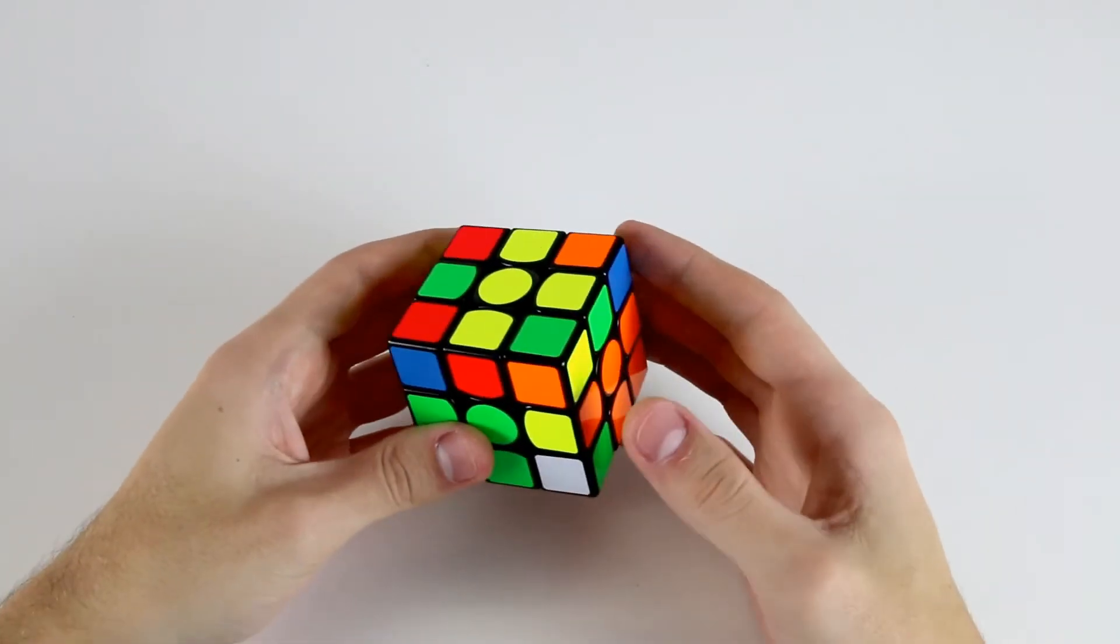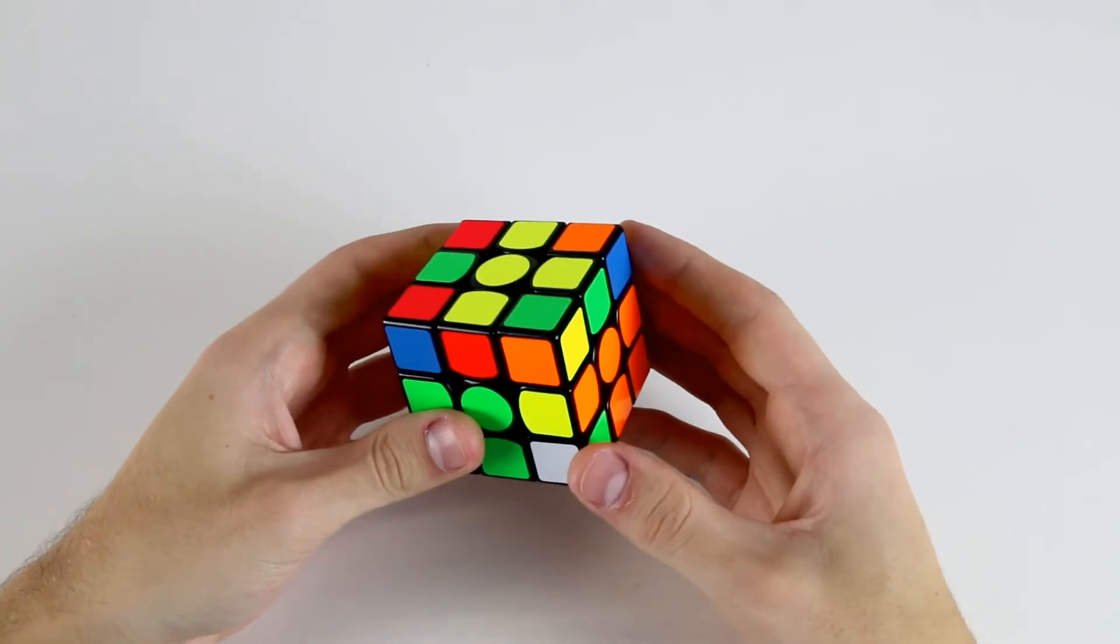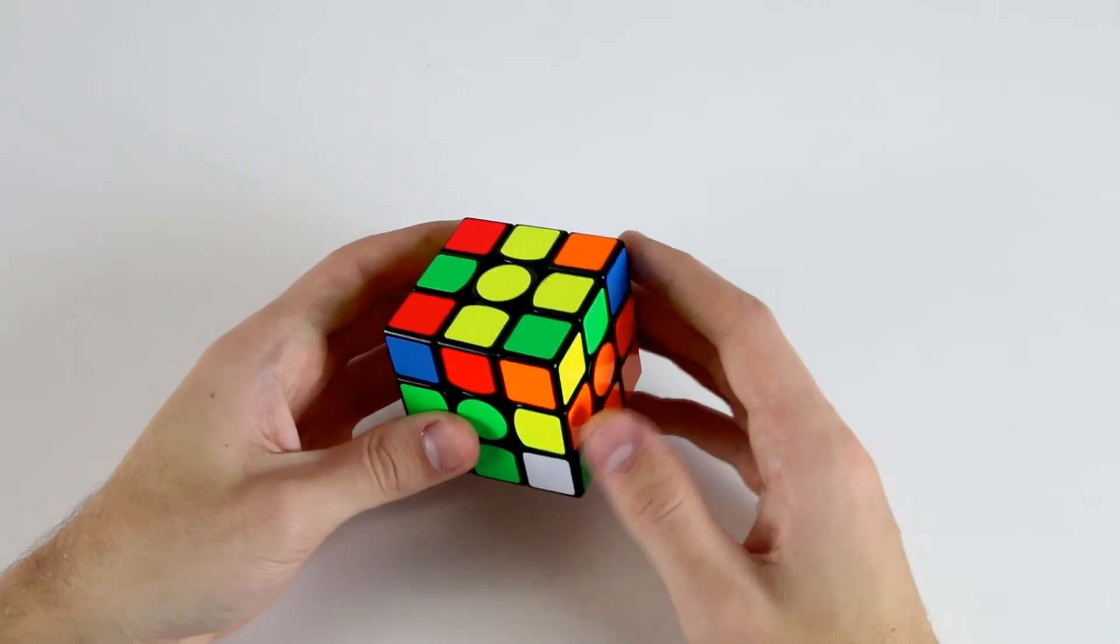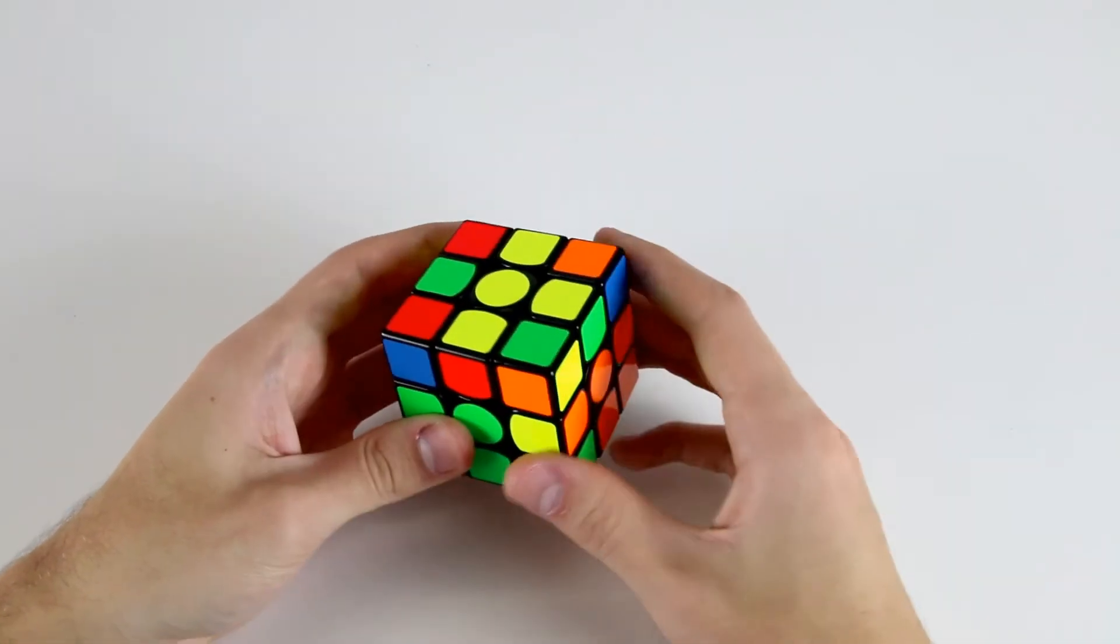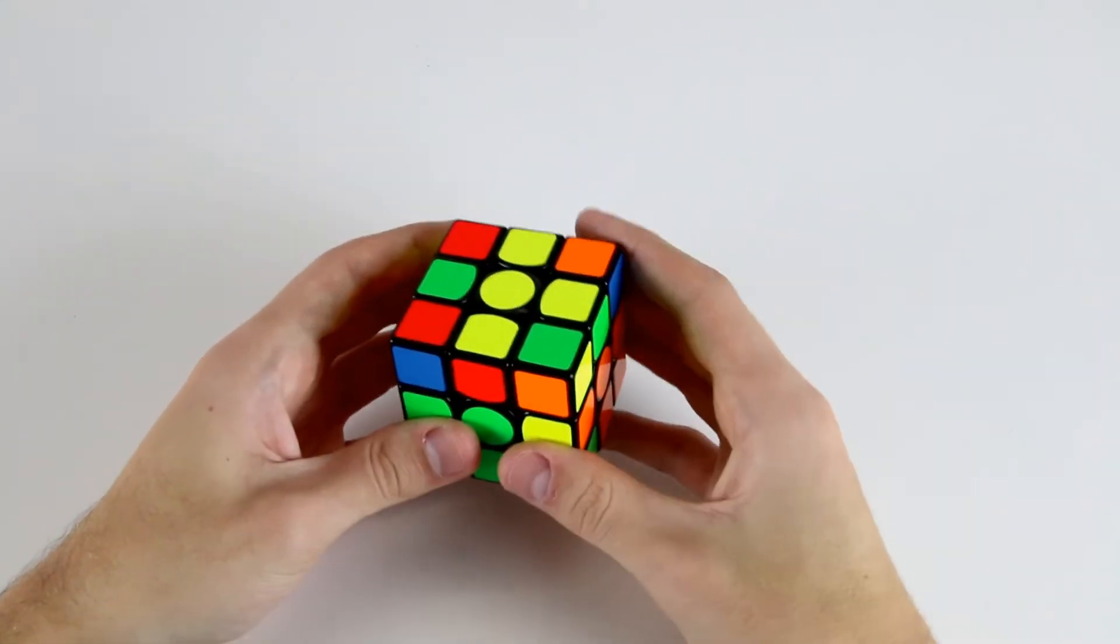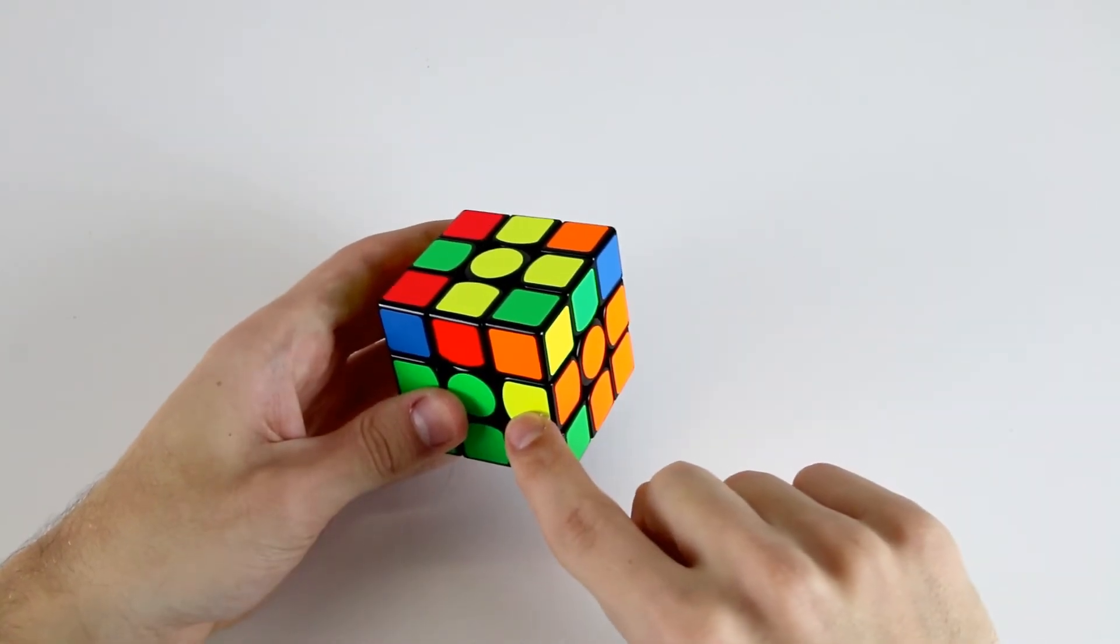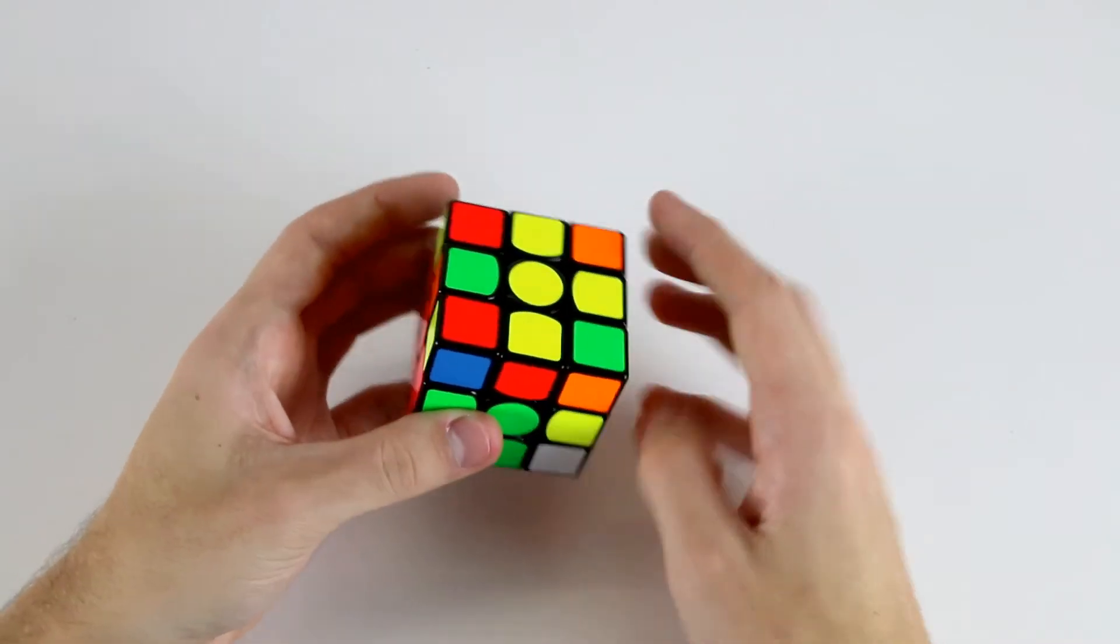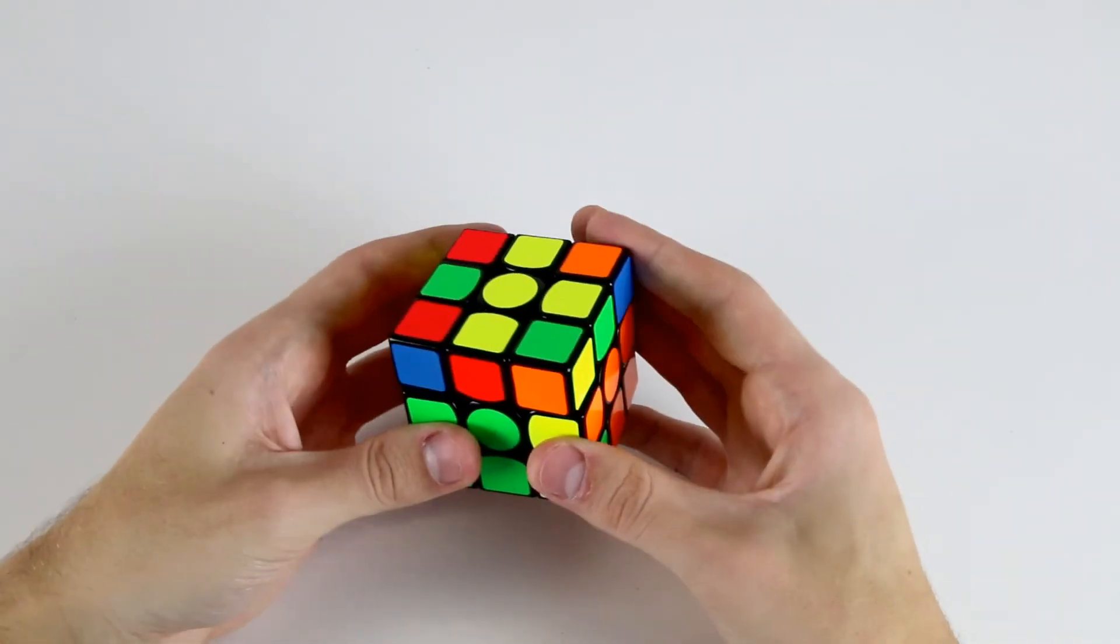One thing we can do when we get to the last F2L slot is actually deduce the orientation of our edge and figure out whether we need to do a rotation by looking at the orientation of our last layer edges. Here we have three last layer edges already oriented and we have this one which is yellow and facing forward, so it's also oriented. That means the last F2L edge will definitely be oriented and we don't have to do any rotations.